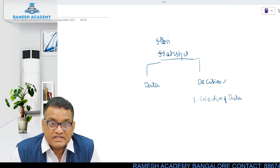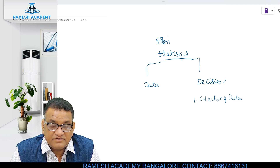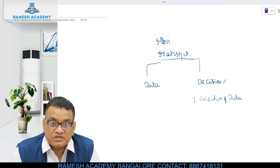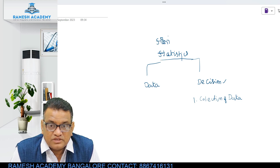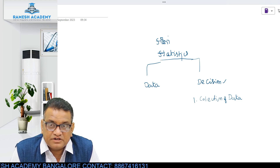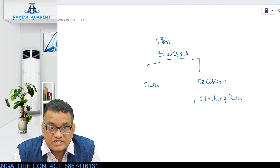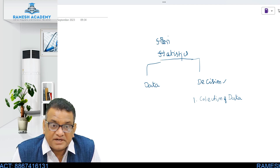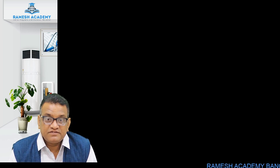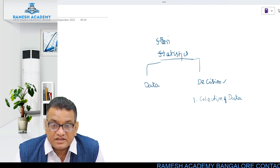There are areas where you cannot depend on secondary data and must go with primary data. For example, can we take five-year-old faculty feedback today? No — you have to collect fresh data. Another example is exit polls before election results: they cannot use five-year-old data for predictions. So once the data is ready, it is available for further processing.